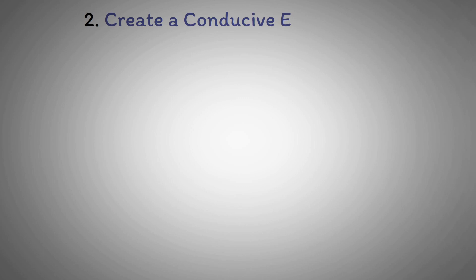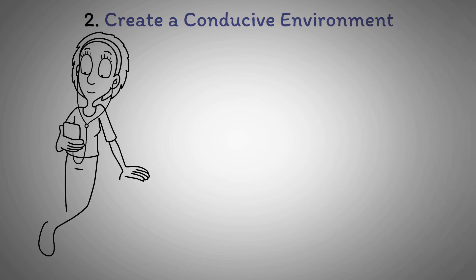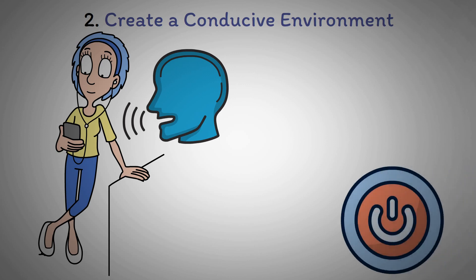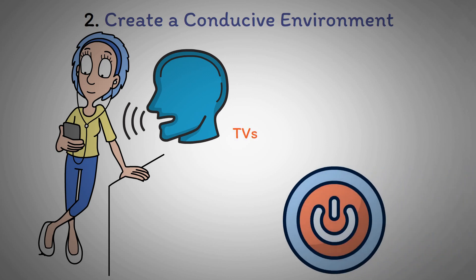2. Create a Conducive Environment. Use noise-canceling headphones or earplugs if you're in a noisy environment and cannot control the external noise. Turn off unnecessary devices that produce sound, like TVs, radios, or unnecessary alerts on your phone and computer.